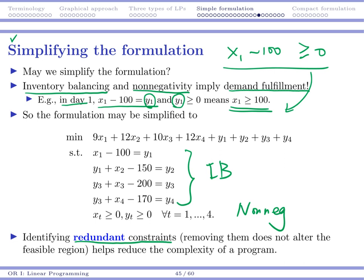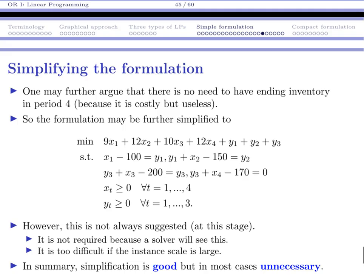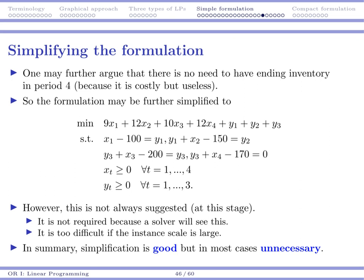And the redundant constraint means if we remove those redundant constraints, the feasible region remains identical. So if we are able to find redundant constraints and remove them, that of course reduces the complexity of a program. And if eventually we input our model into a computer solver, that may help us save some time to make the solution easier to be obtained. In fact, you may have one additional observation. You may argue that there is no reason to have ending inventory in period 4, right? Because we will stop our planning in period 4.